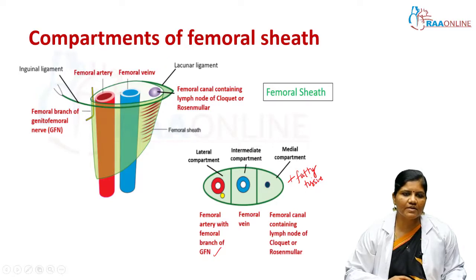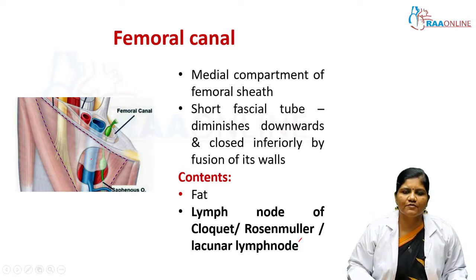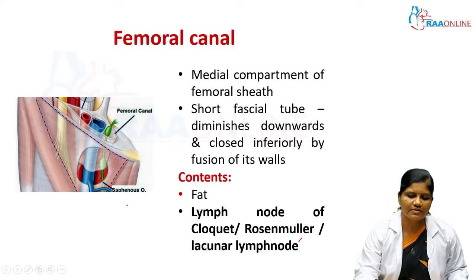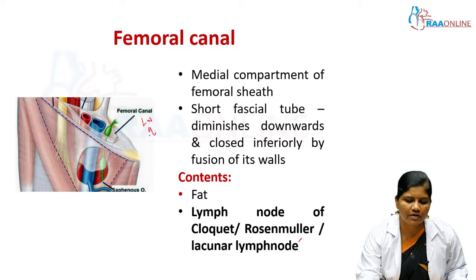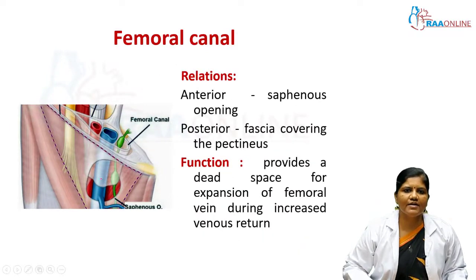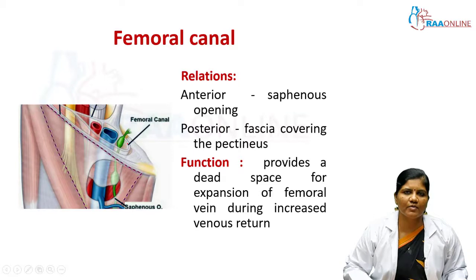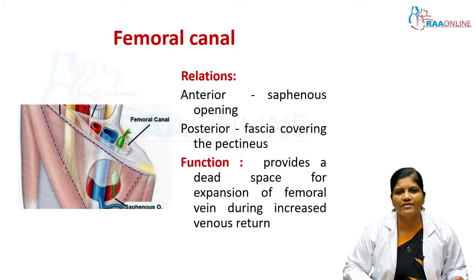The femoral canal is the medial-most compartment of the femoral sheath — a short fascial tube whose width diminishes downward and is closed inferiorly by fusion of its walls. Its contents are fibro-fatty tissue and the lymph node of Cloquet (also called lymph node of Rosenmuller). Anteriorly it relates to the saphenous opening and posteriorly to the fascia covering the pectineus. Its main function is to provide a dead space for expansion of the femoral vein during increased venous return.